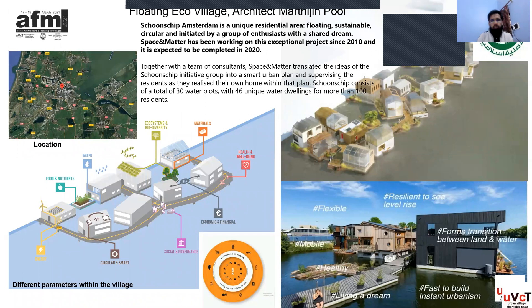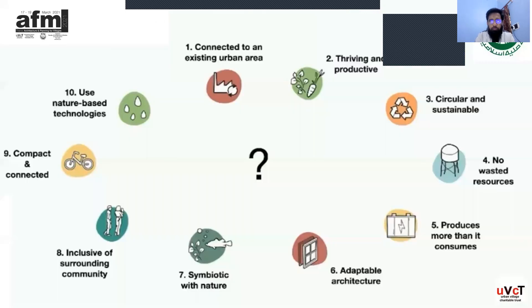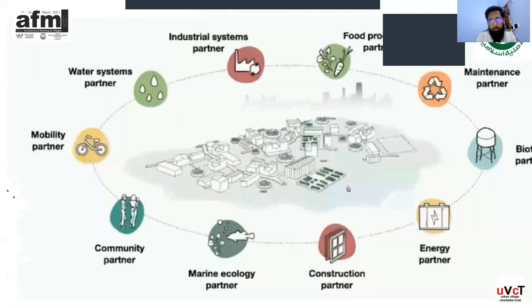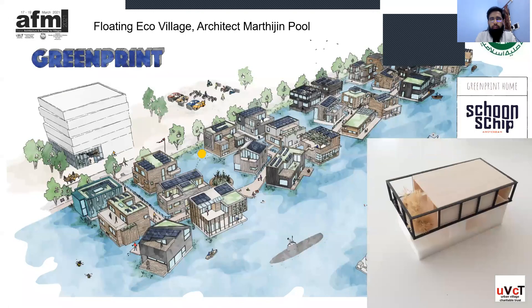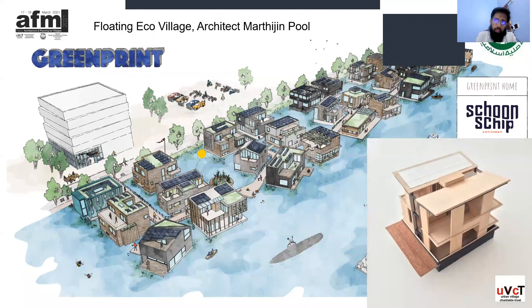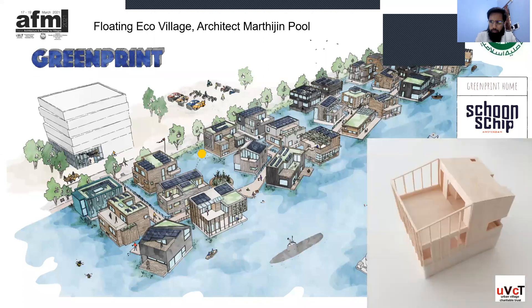Another example is from the Netherlands — an eco-village with approximately 30 water plots, each categorized as a group of six houses. Ten design parameters were defined: connected to the urban area, productive and thriving, circular and sustainable with no wasted resources, producing more than it consumes, adaptable in architecture, symbiotic with nature, inclusive of community, compact and connected, and using nature-based technologies.